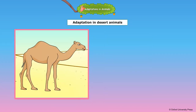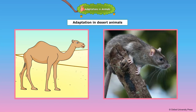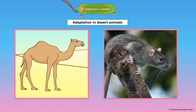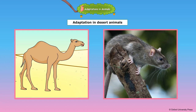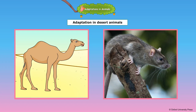The kangaroo rat of the desert lives in burrows in the sand to overcome heat. The camel, the most common animal we associate with the desert, is especially adapted to desert conditions. Its hump stores fat which gets converted to energy when the camel cannot find food. It has stomach-like pouches where it can store up to 70 litres of water.